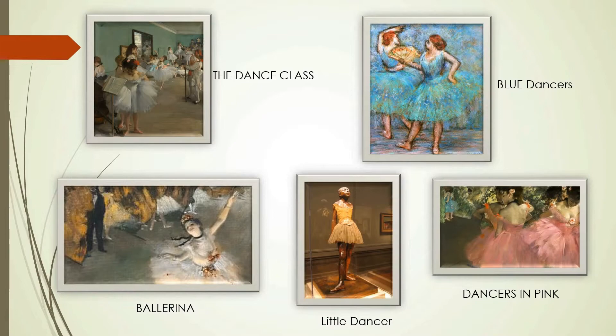'The Little Dancer, Aged Fourteen' is a sculpture begun around 1880 by Edgar Degas, depicting a young student of the Paris Opera Ballet Dance School — a Belgian girl named Marie van Goethem. This sculpture was especially notable for Degas. Edgar Degas is a very important artist, and one can distinguish him from his works of art. Thank you.